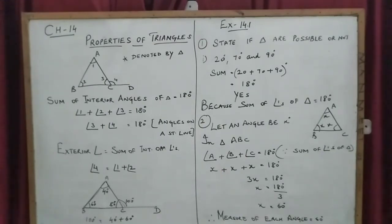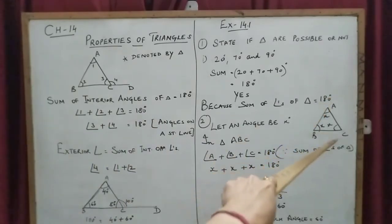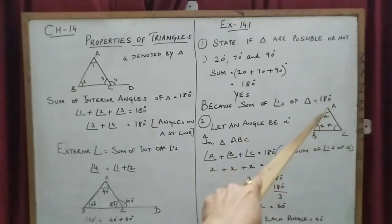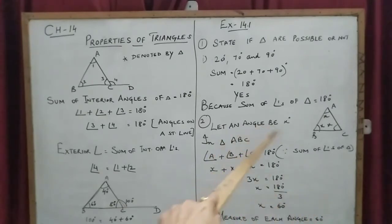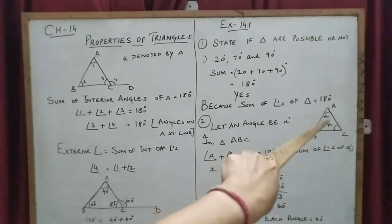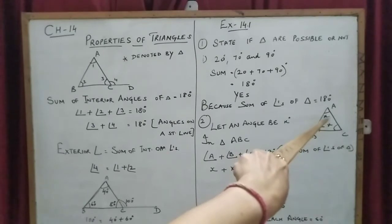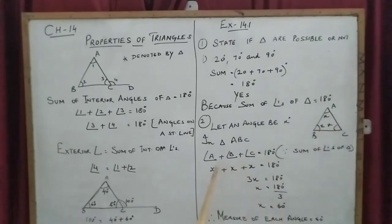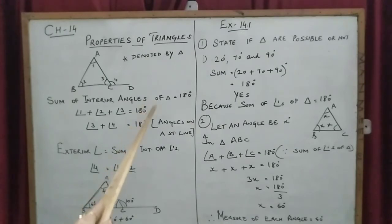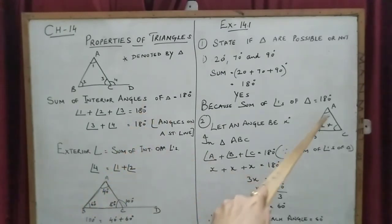The angles of a triangle are equal. We know a triangle has three angles. Since all three are equal, we let each angle be x degrees. In triangle ABC, angle A plus angle B plus angle C equals 180 degrees, according to the angle sum property. So x plus x plus x gives us three x.